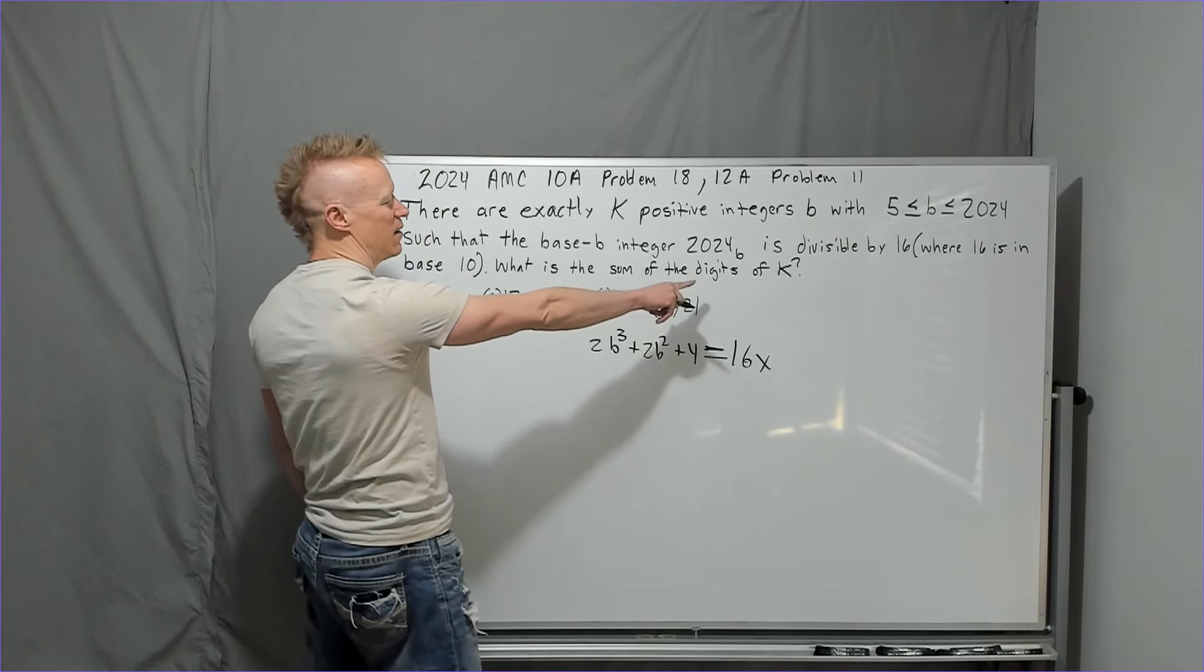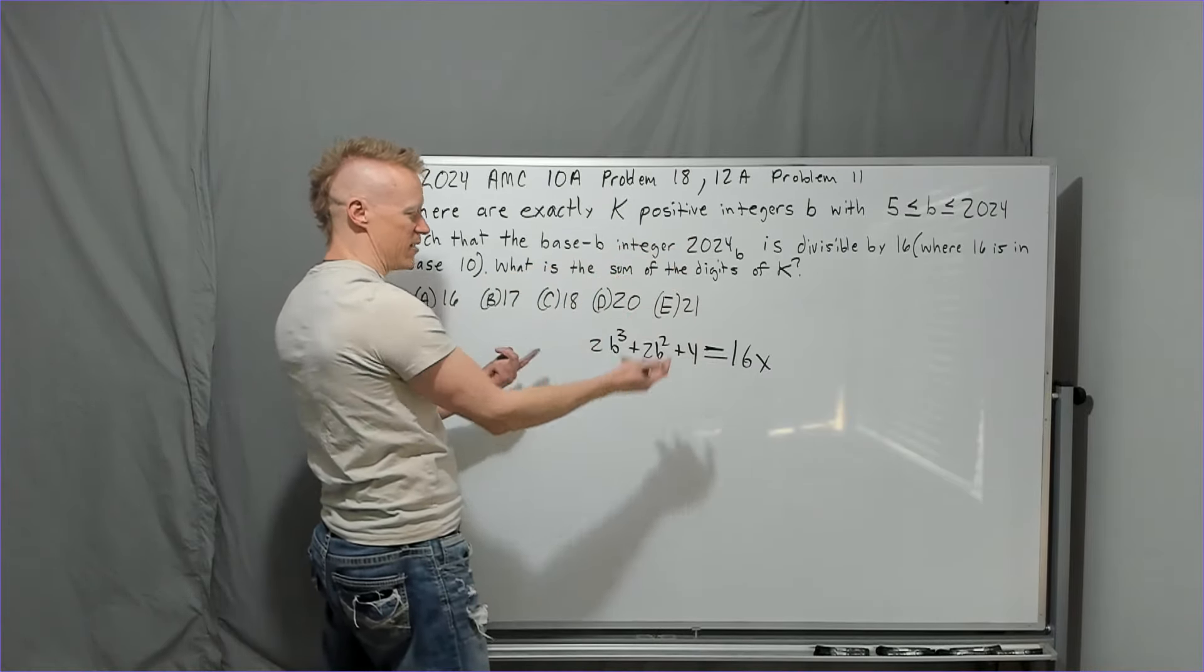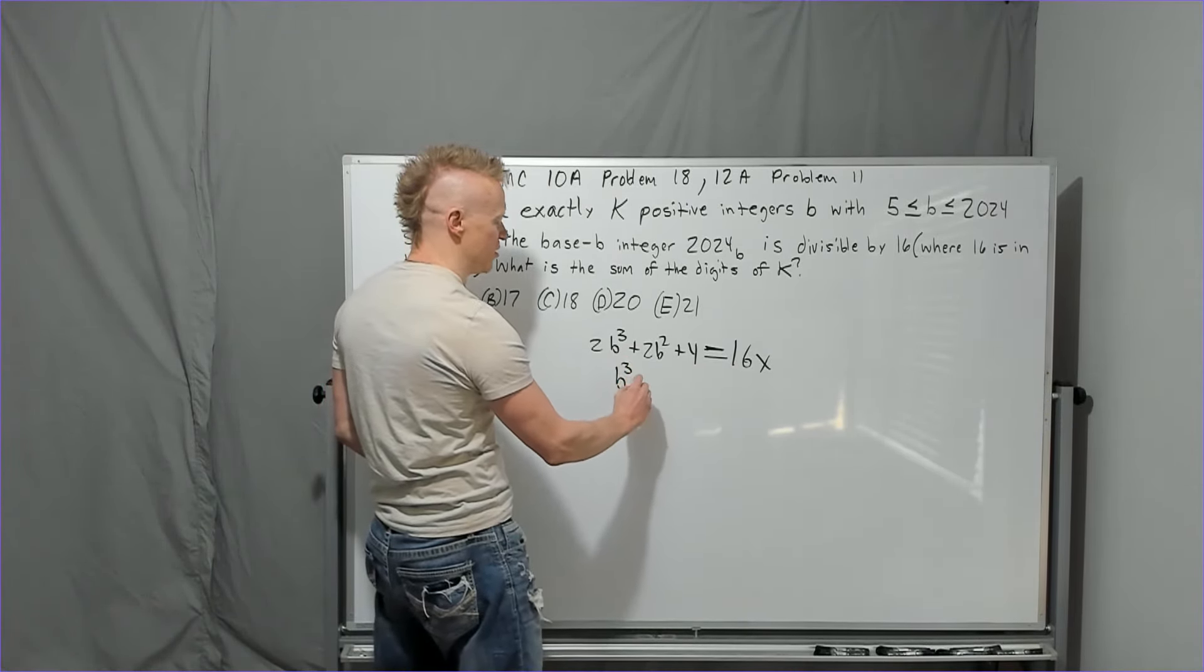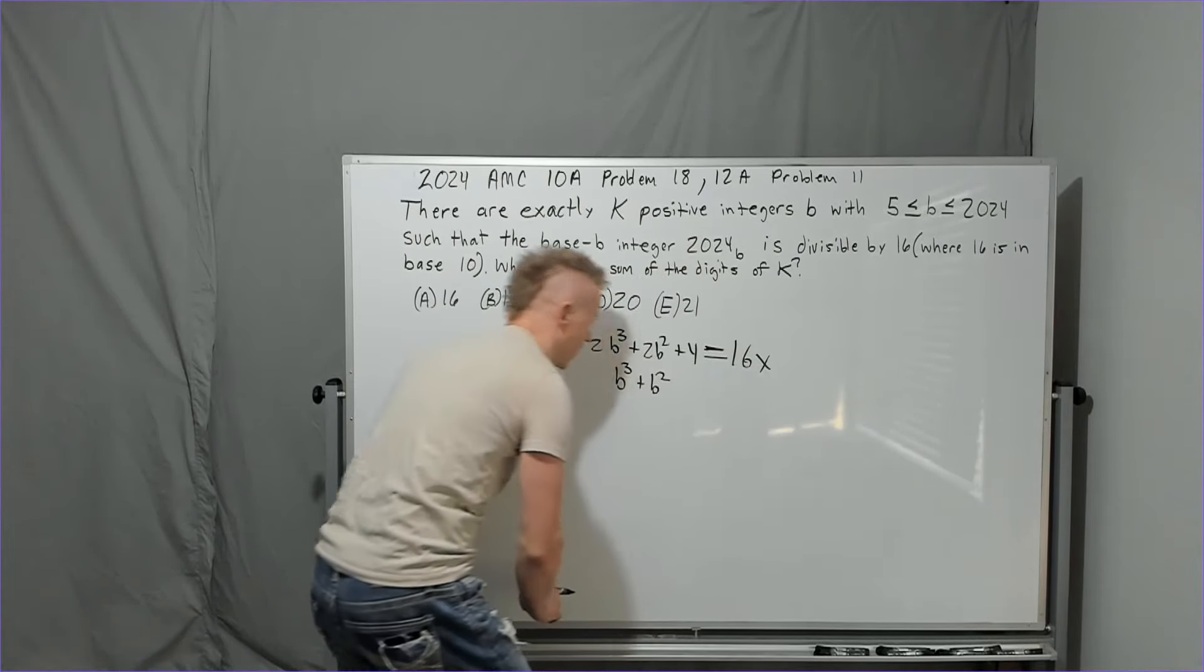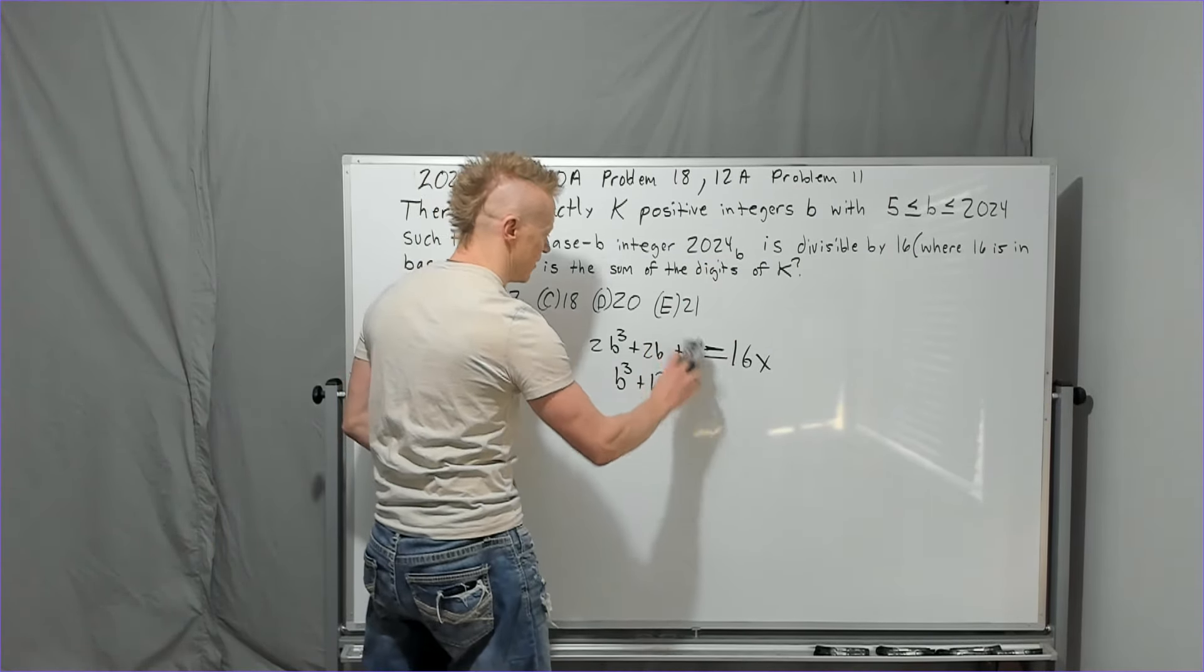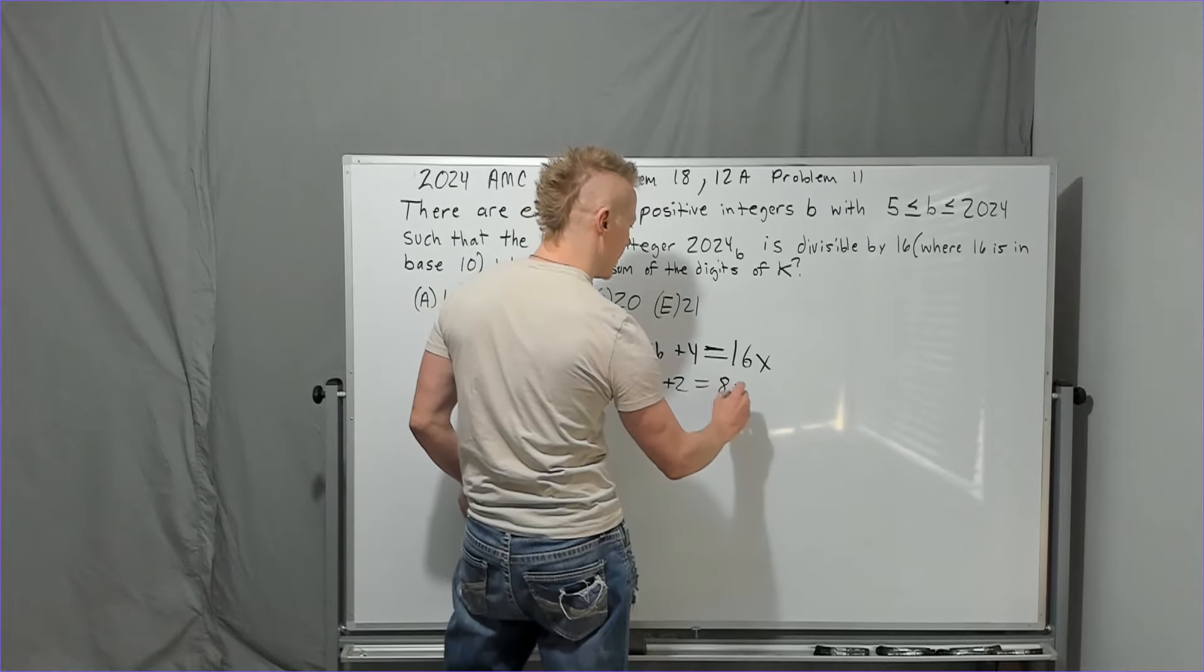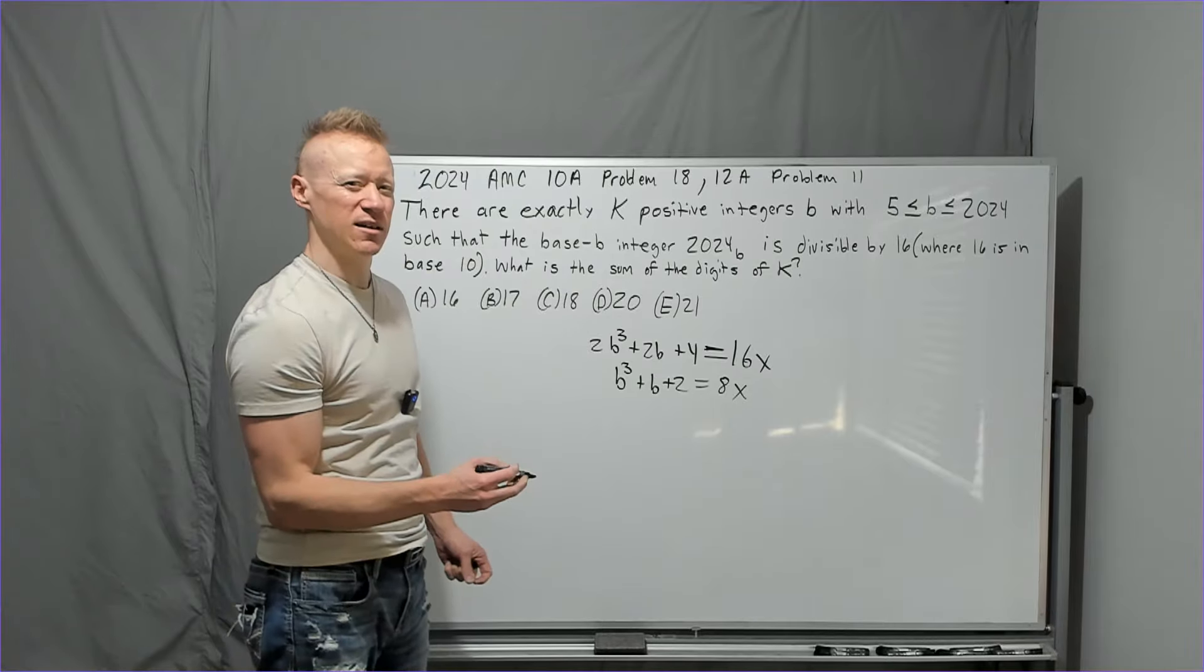What is the sum of the digits of K? K being the number of values of B that will work. So now that we're all in base 10, let's just divide by 2. We're going to get B cubed plus B plus 2. That's late. 2B plus 4. No square on there. And B cubed plus B plus 2. Is equal to 8X now. So I need this number to be a multiple of 8.